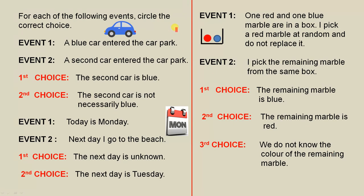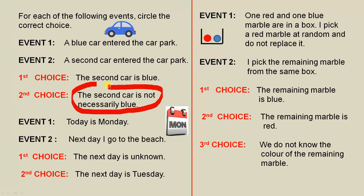For each of the following events, circle the correct choice. For the first example, event one: a blue car entered the car park. Event two: a second car entered the car park. Our choices are: the second car is blue, or the second car is not necessarily blue. The correct answer is the second car is not necessarily blue, because just because the first car was blue, it does not mean that the second car has to be blue.